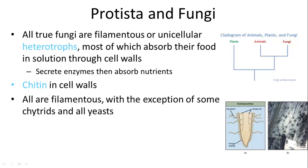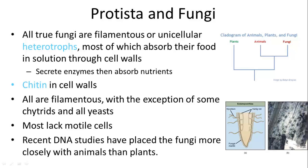All of them are filamentous, except for some chytrids and yeast cells, and most of them do not have motile cells — so they don't have cilia or flagella. DNA studies have shown that they are actually more closely related to animals than to plants, which makes sense because plants have photosynthetic abilities, and both animals and fungi are heterotrophs.